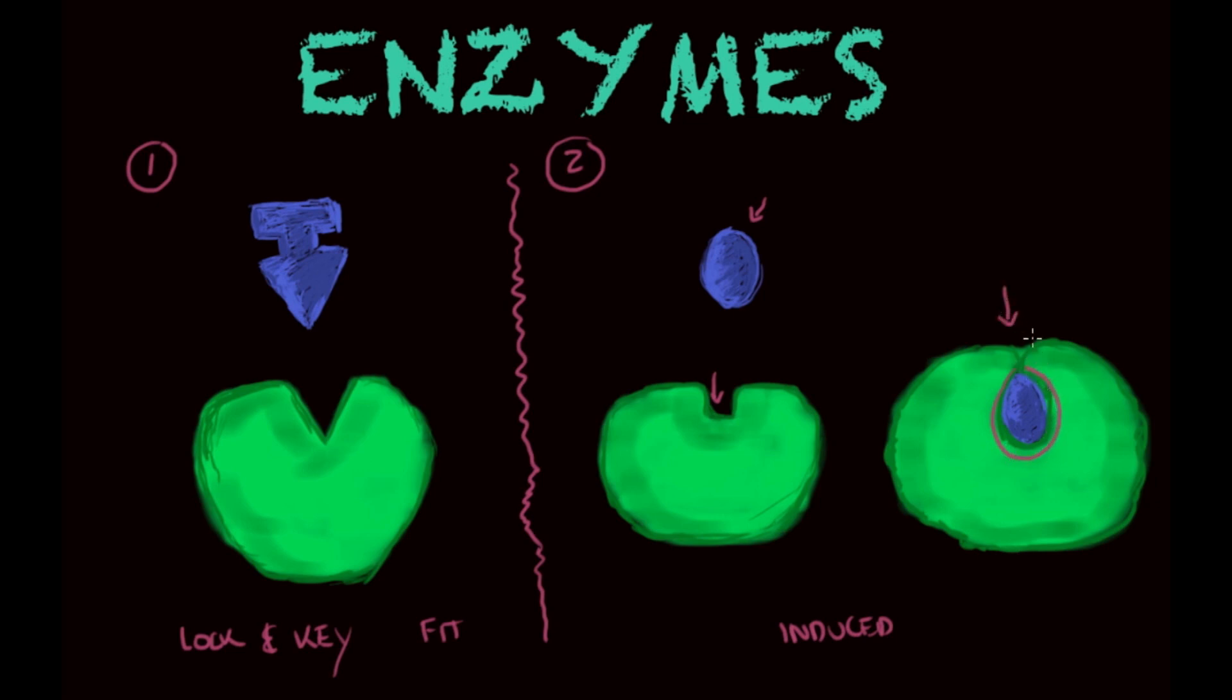And this is very important because in some cases there is this enzyme known as hexokinase, one example, that is able to, or that uses this model, this induced fit model, to attract the substrate and fit it into the active site.